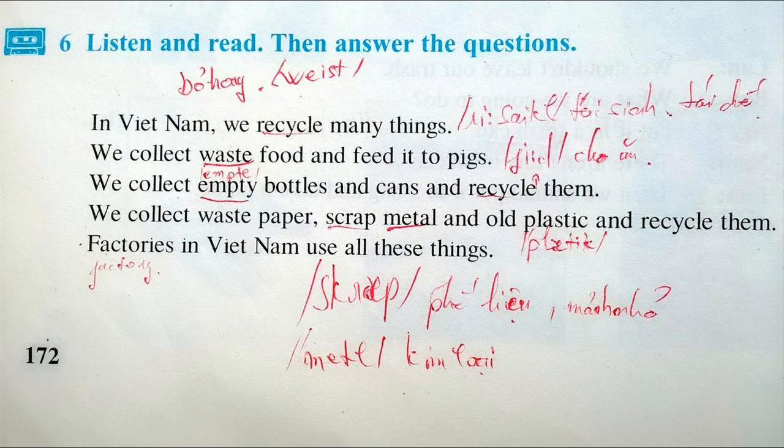Listen and read, then answer the questions. In Vietnam, we recycle many things. We collect waste food and feed it to pigs. We collect empty bottles and cans and recycle them. We collect waste paper, scrap metal, and old plastic and recycle them. Factories in Vietnam use all these things.